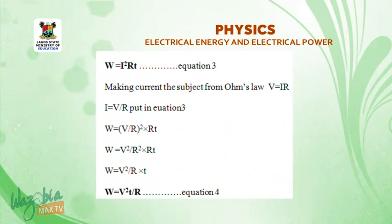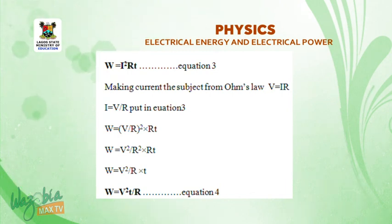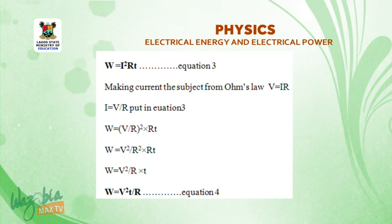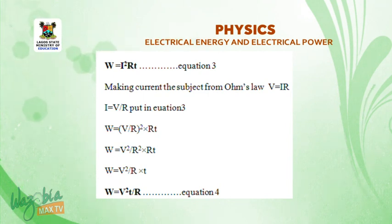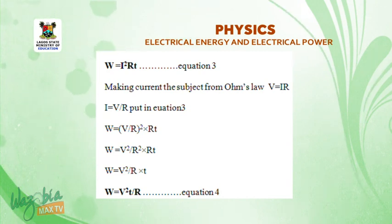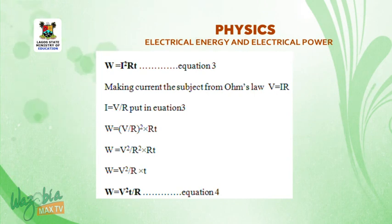Welcome back. The formula for electrical energy is W = I²Rt. Using Ohm's law again, making I the subject: I = V/R. Substituting into the equation W = I²Rt, we get W = (V²/R²) × R × t, which simplifies to W = V²t/R. Here V is potential difference, t is time, and R is resistance.